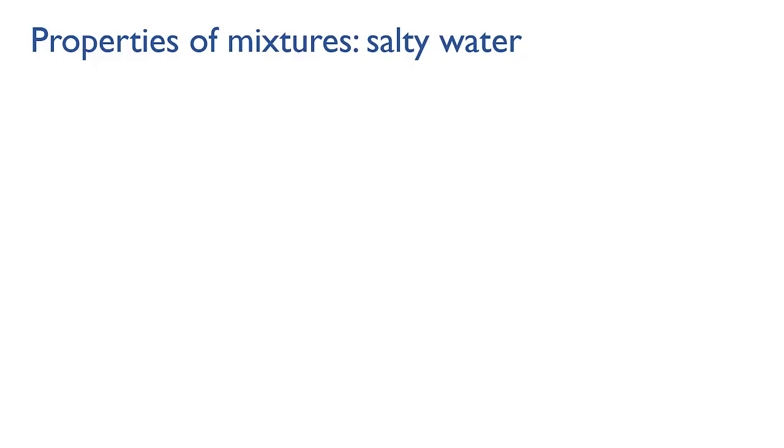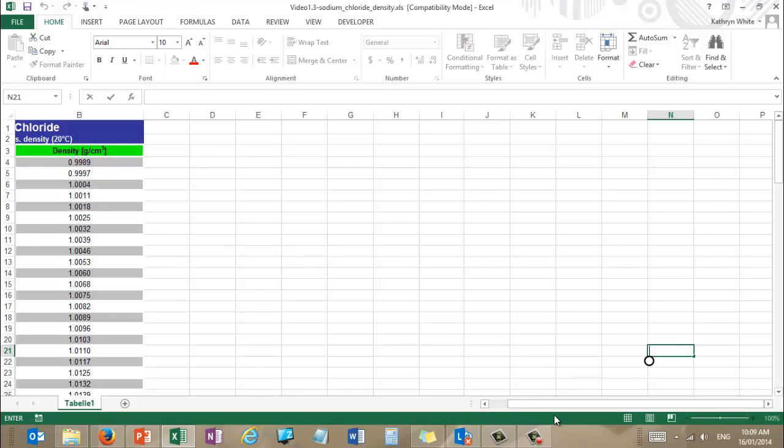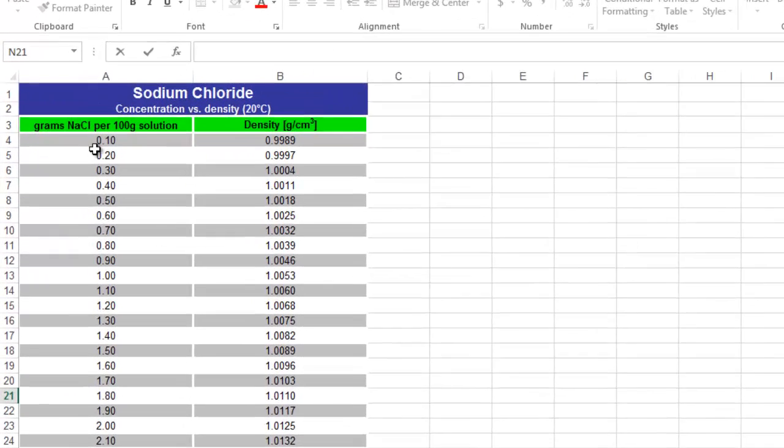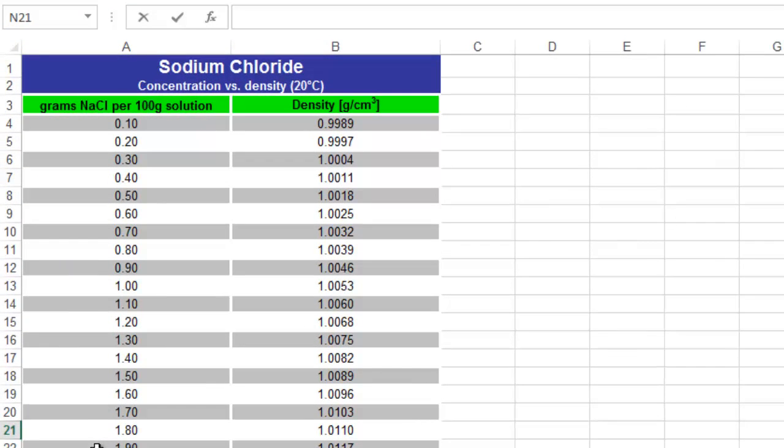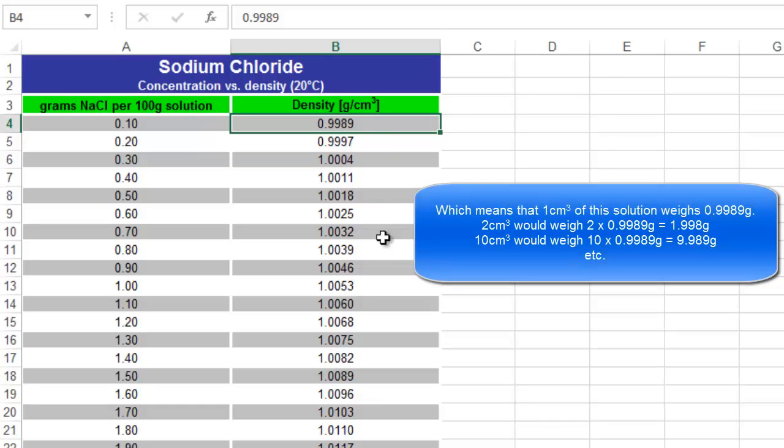So let's take salty water as an example. I've got here some data that I pulled off the web, which shows the concentration of different salty solutions. You can see grams of sodium chloride per 100 grams of solution, where the rest of the solution is made up of water. And then the density value for each of these solutions. So you can see the first line here. We've got 0.1 grams of sodium chloride per 100 grams, which means that 99.9 grams must be water. And the density of that solution is 0.9989 grams per centimetre cubed.